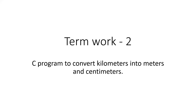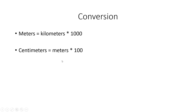The problem definition for term work 2 is: we need to write a C program to convert kilometers into meters and centimeters. We take input from the user in the form of kilometers, convert it into meters and centimeters using appropriate formulas, and display the result as output to the user.